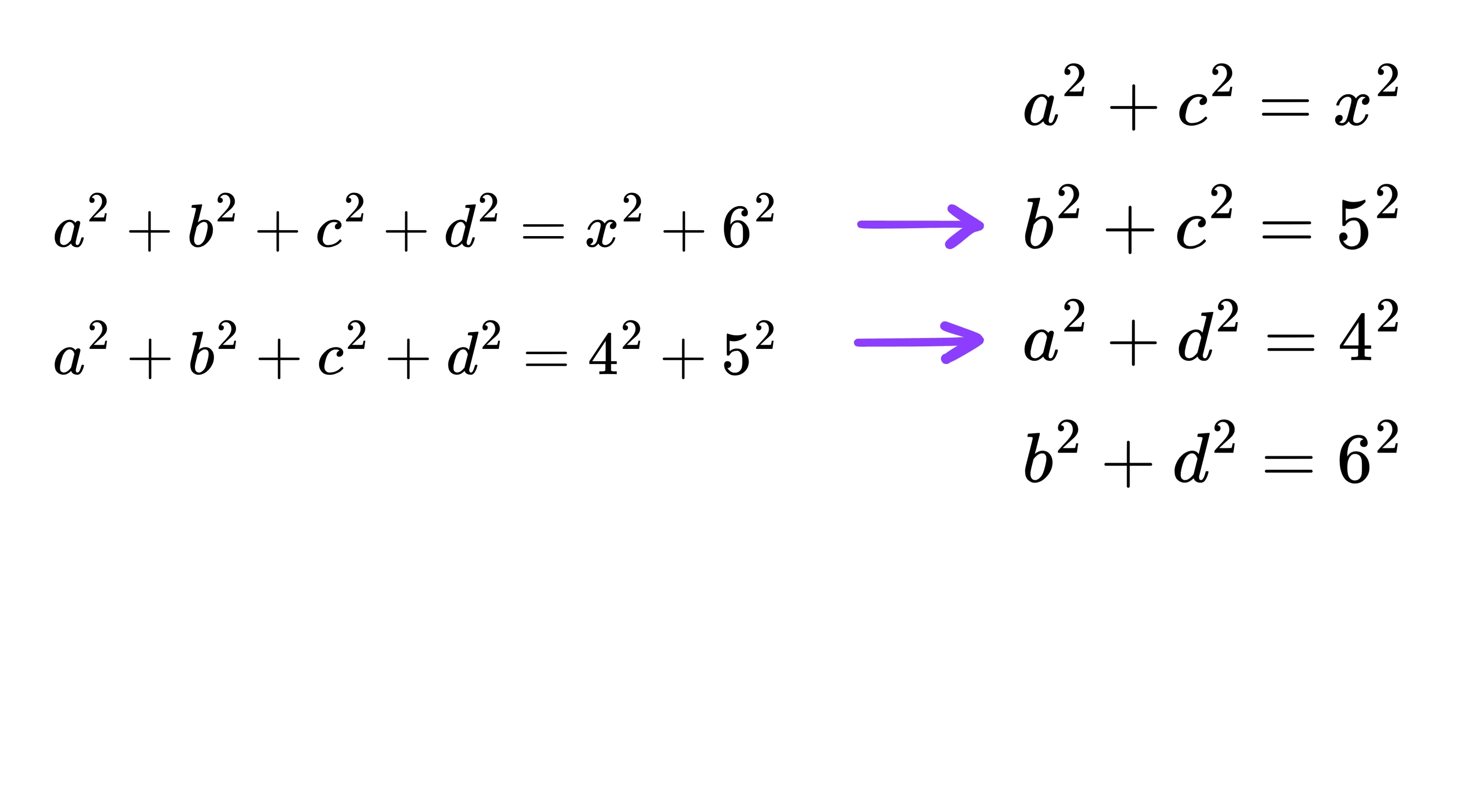Now comes the goosebumps part. This means the left side of both these combinations is exactly the same, which is this part. That means their right sides must also be equal. So, we say X square plus 6 square is equal to 4 square plus 5 square.